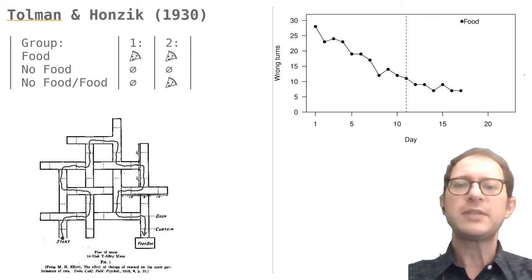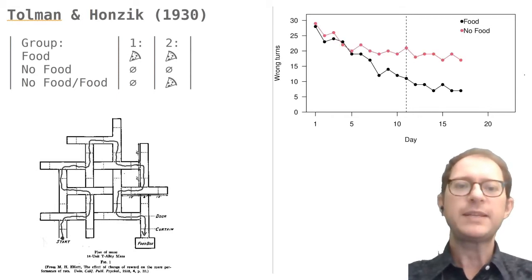So Tolman and Honzik introduced two more groups of rats. One of them never found food in the maze and was used as a control group. As you can see, these rats did not learn to go to the food quickly. This is not surprising, because they had no incentive to go there.